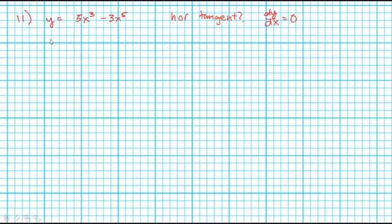So when I take the derivative of y with respect to x I get dy dx. When I take the derivative of this with respect to x I'm going to get 15x squared minus 15x to the fourth. So when is 15x squared minus 15x to the fourth equal to 0?